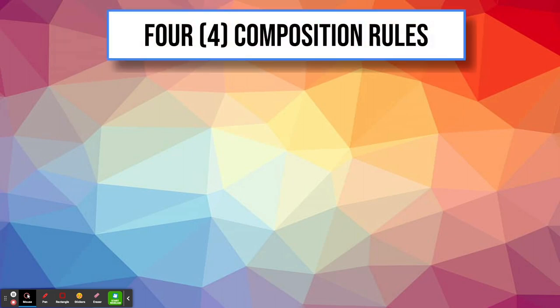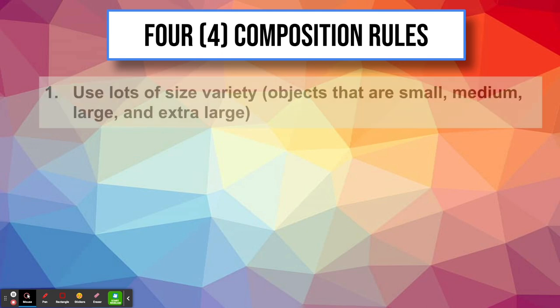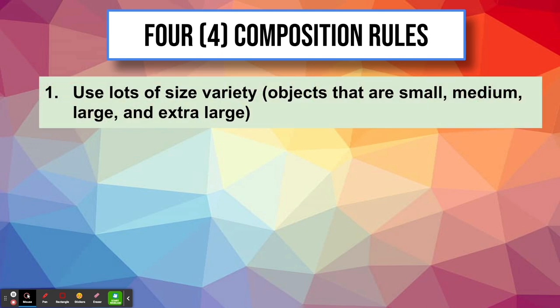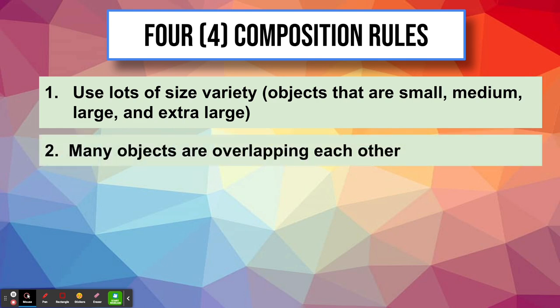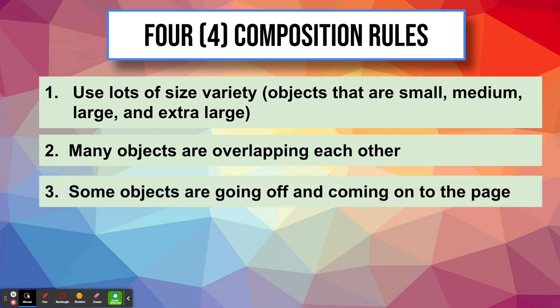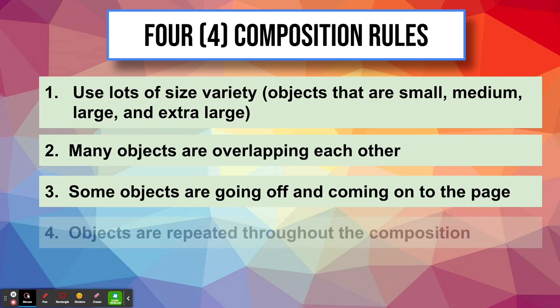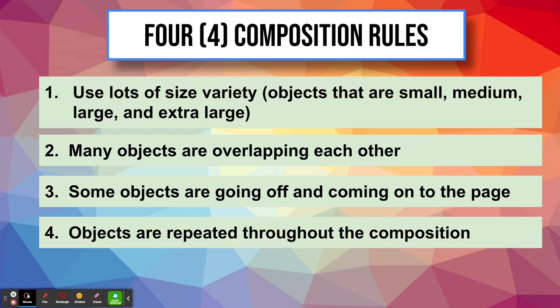For the art project you will be doing, we will be following four basic compositional rules. Number one: use lots of size variety — objects that are small, medium, large, and extra large. Number two: have objects that overlap each other. Number three: some objects should be going off and coming onto the page. And number four: objects are repeated throughout the composition — repetition. Let's look at examples for each of these rules so we can visualize what they mean.